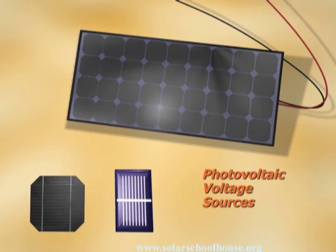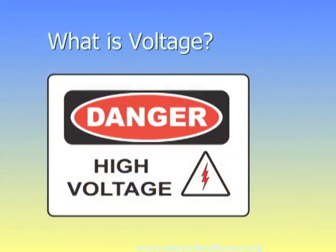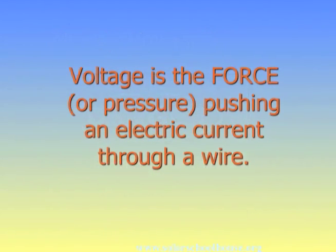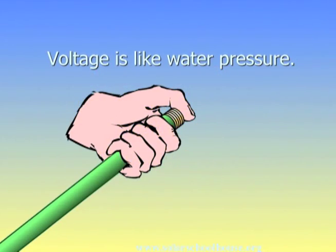The scientific name for solar cells is photovoltaic cells. Photo means light, and voltaic has to do with volts or voltage. So what is voltage? Voltage is the force, or pressure, pushing an electric current through a wire. Voltage pushes electricity through a circuit. Imagine you're stopping the flow of water through a garden hose by holding your thumb tightly on the end. You can feel the pressure of the water trying to push your thumb off the end of the hose. This pressure — this water pressure — is similar to the pressure that pushes electricity through a wire.